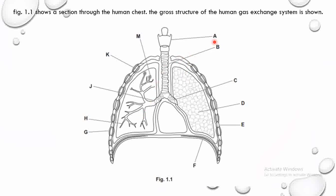B is the trachea. C and J are both bronchi — bronchus is singular, bronchi is plural. The trachea is the biggest part; it splits into two smaller tubes called bronchi. The bronchus splits further into bronchioles. And M is the alveolus — the air sacs, the gas exchange surface.